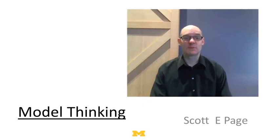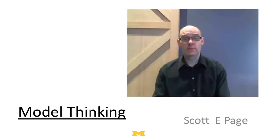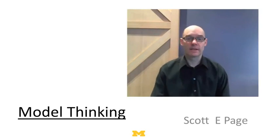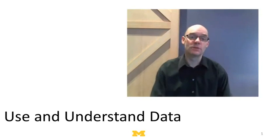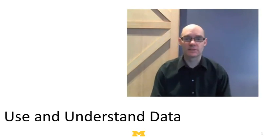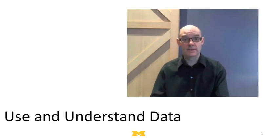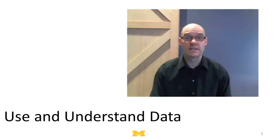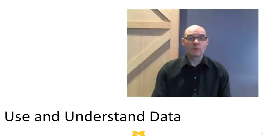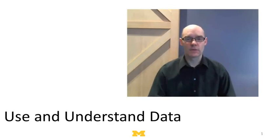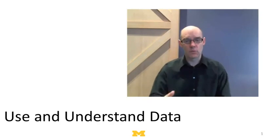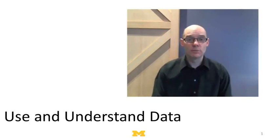Welcome back. In the previous lecture, we talked about how we could use models to become clearer thinkers. In this lecture, what we're going to do is talk about how we can use models with data. This is an important reason why people use models. When you talk to scientists about why they use models — whether social scientists or natural scientists — what they'll typically say is: we use models to take them to data, to understand data in better ways. What I want to do is unpack that in several directions and give some specific reasons or ways in which people use models with data.